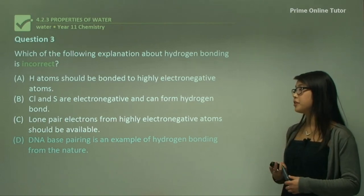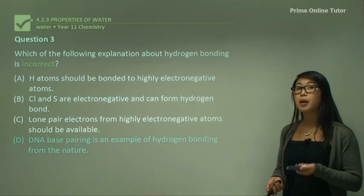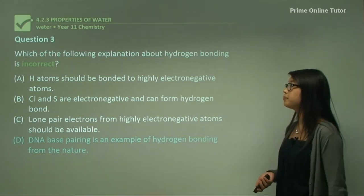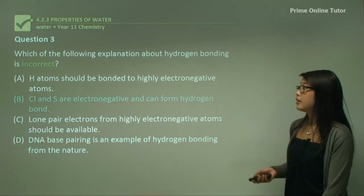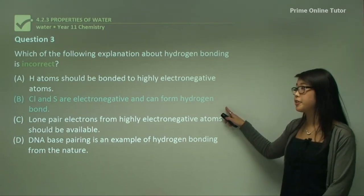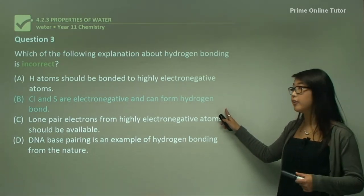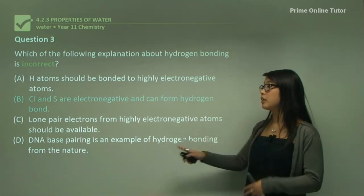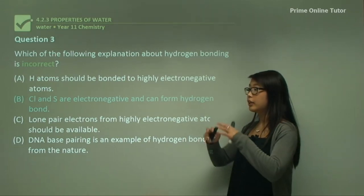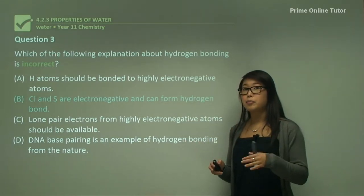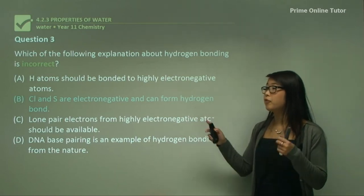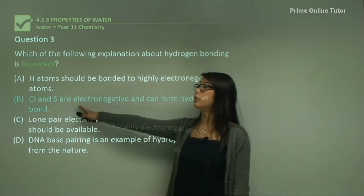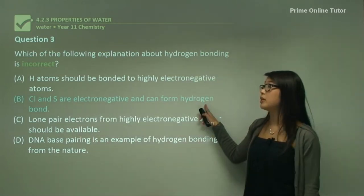Option D — DNA base pairing is an example of hydrogen bonding from nature — that's true, because covalent bonds are within the chains and hydrogen bonds exist between the chains. So option B is incorrect: it states chlorine and sulfur are electronegative and can form hydrogen bonds. While they are electronegative and do form dipoles, because chlorine and sulfur are so large, the electron cloud is too large for the lone pairs to be accessed, so hydrogen cannot interact with their lone pairs. Therefore option B is incorrect.